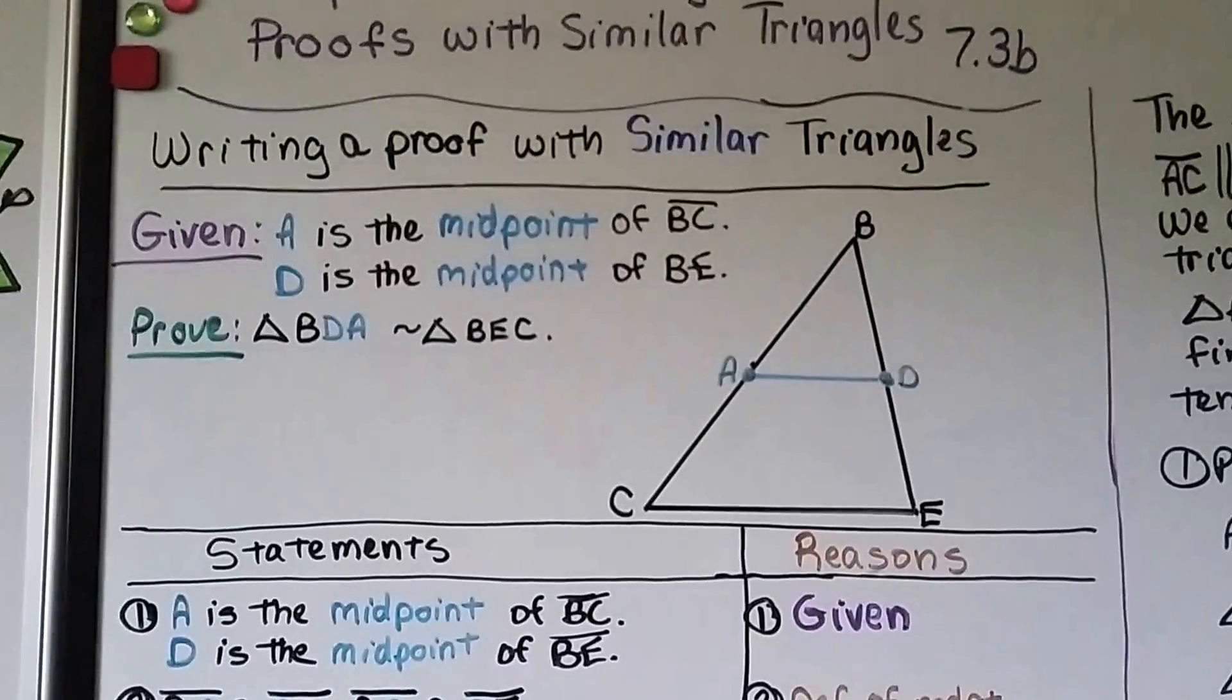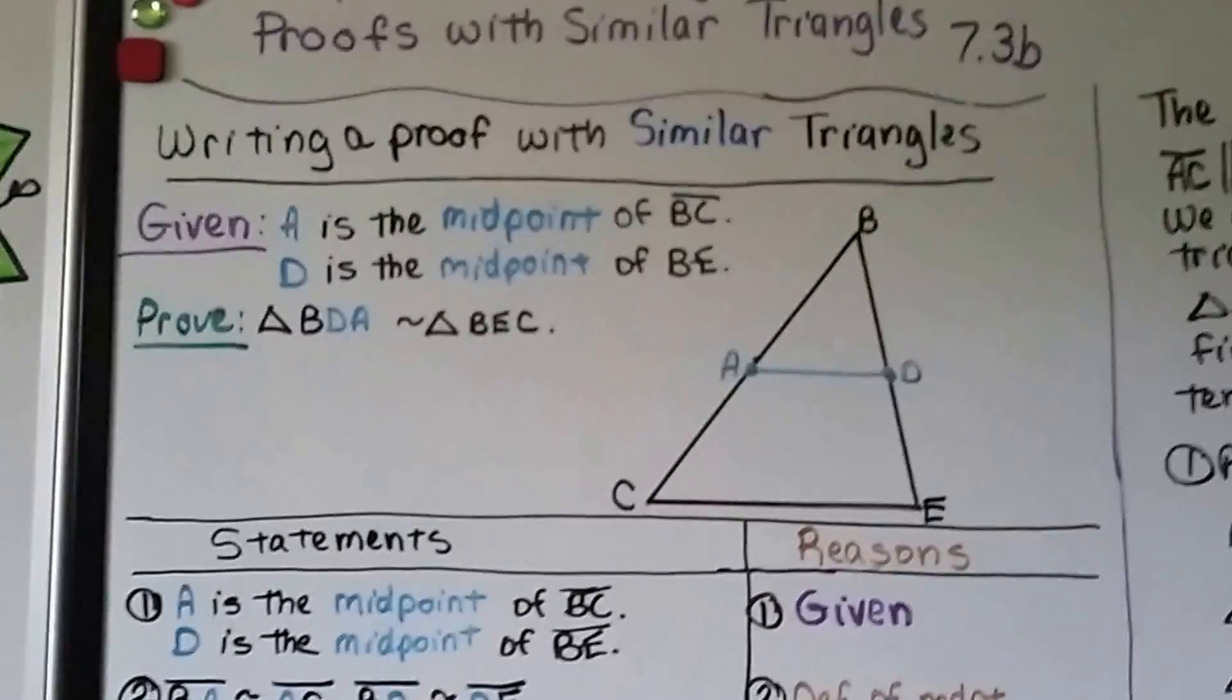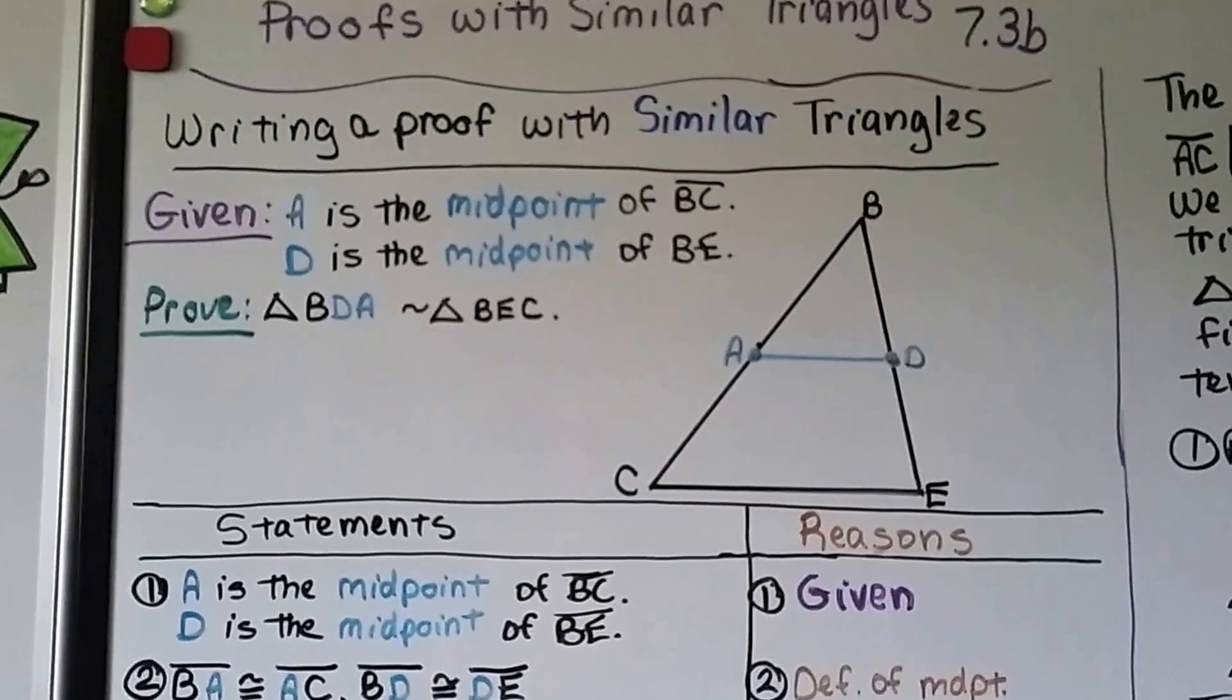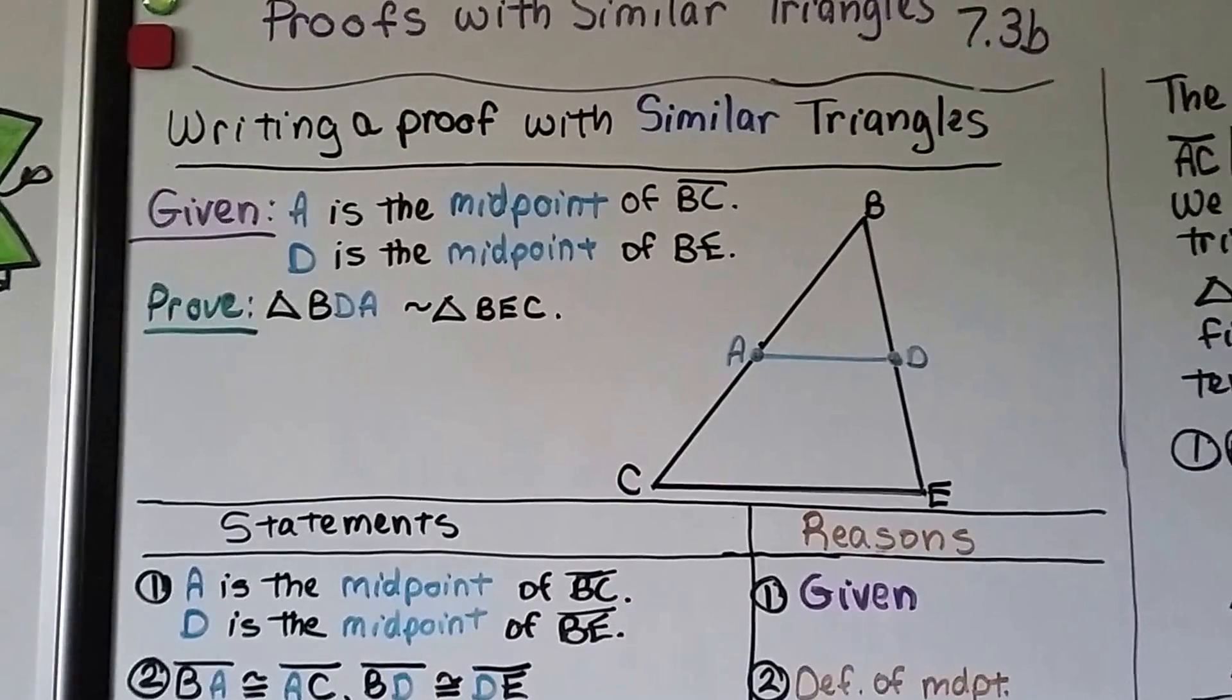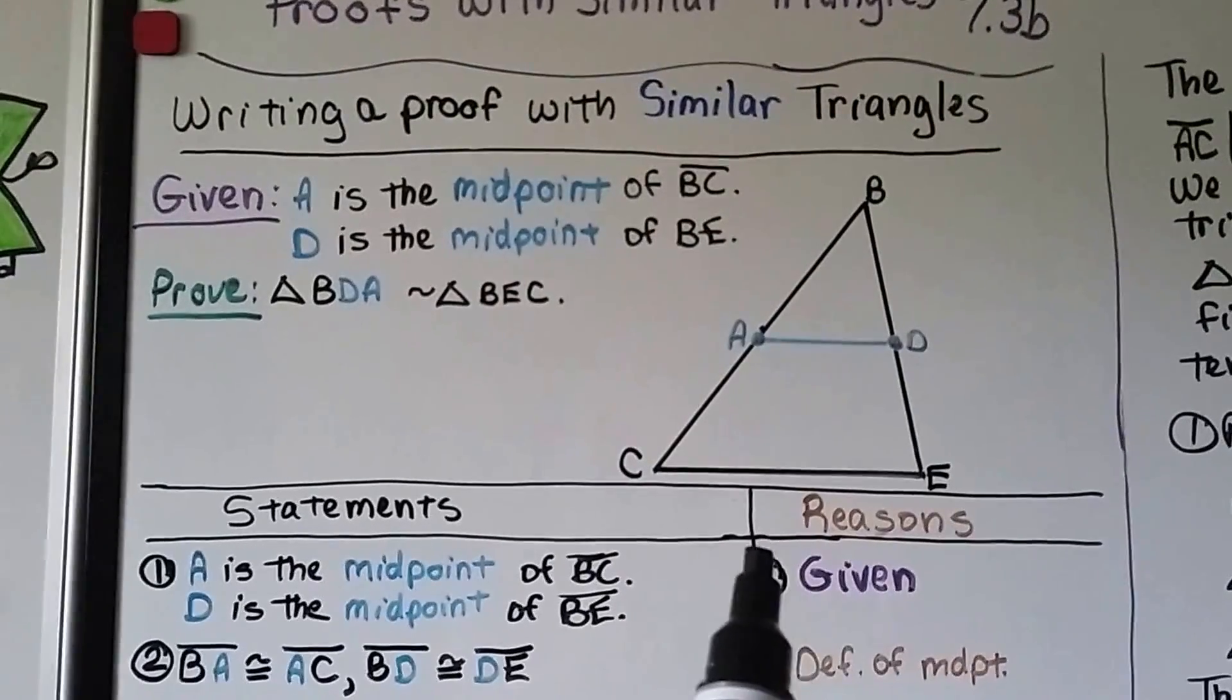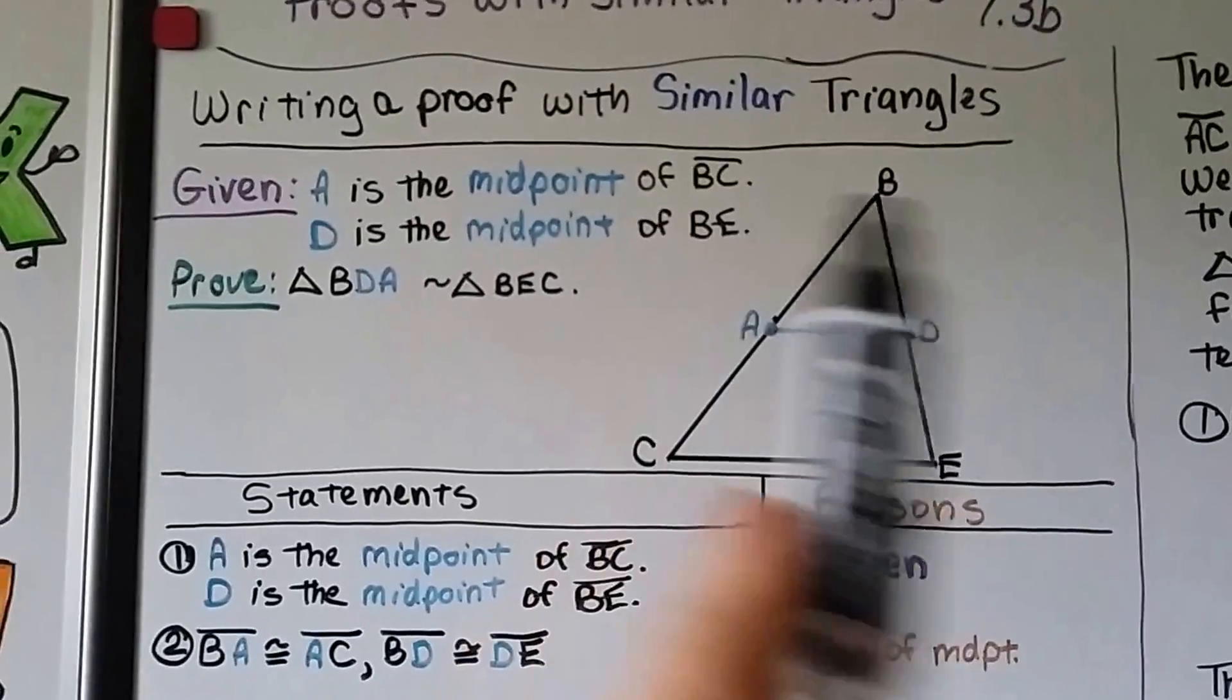The first thing we see is the given that A is the midpoint of BC, and D is the midpoint of BE. We need to prove that triangle BDA, this little one, is similar to triangle BEC, the large one.